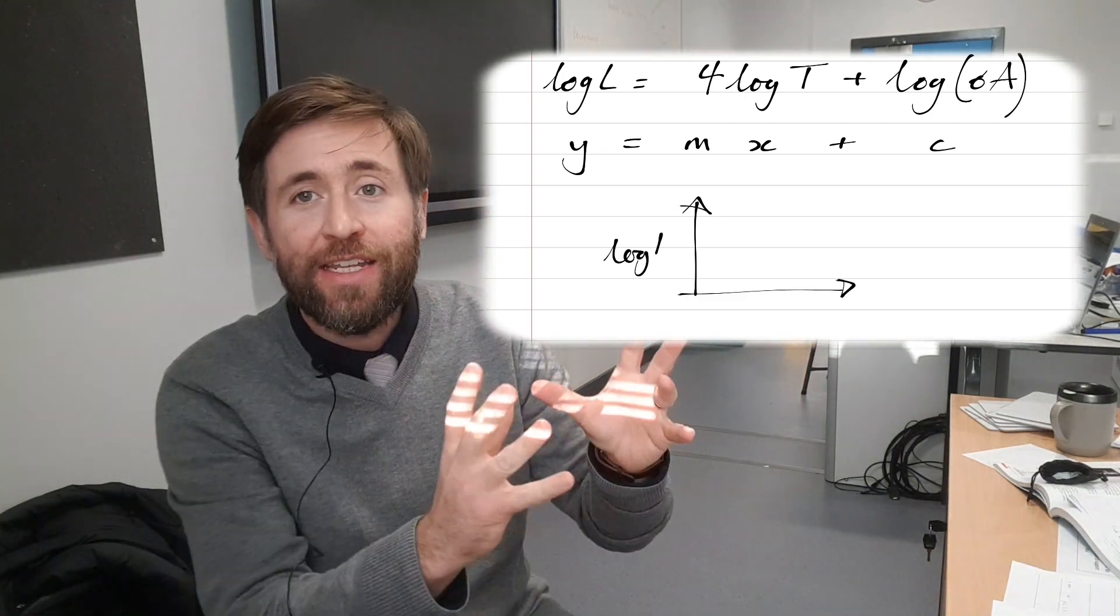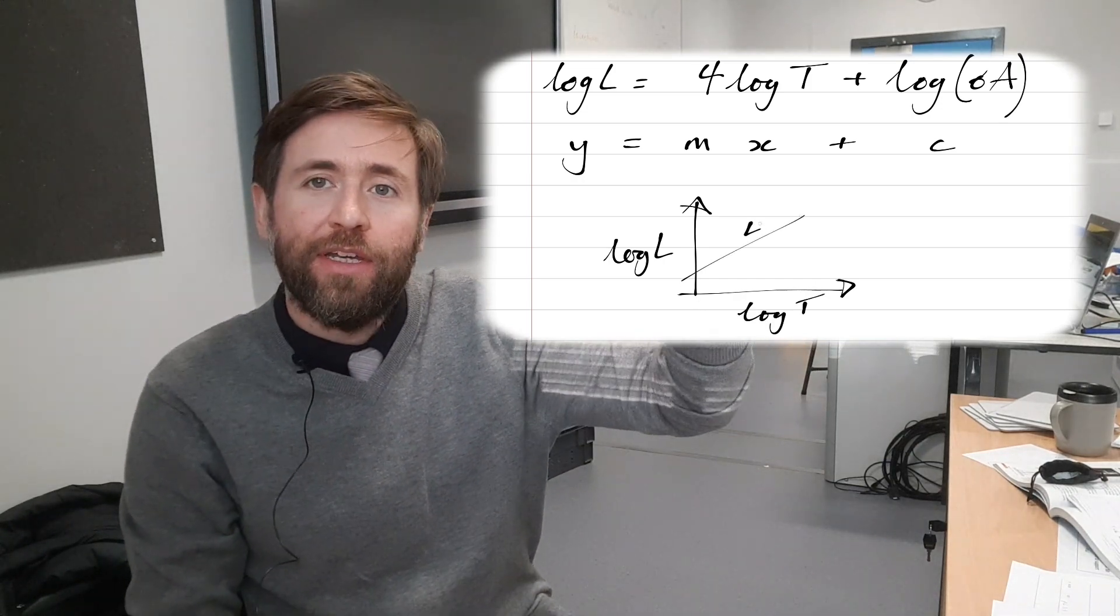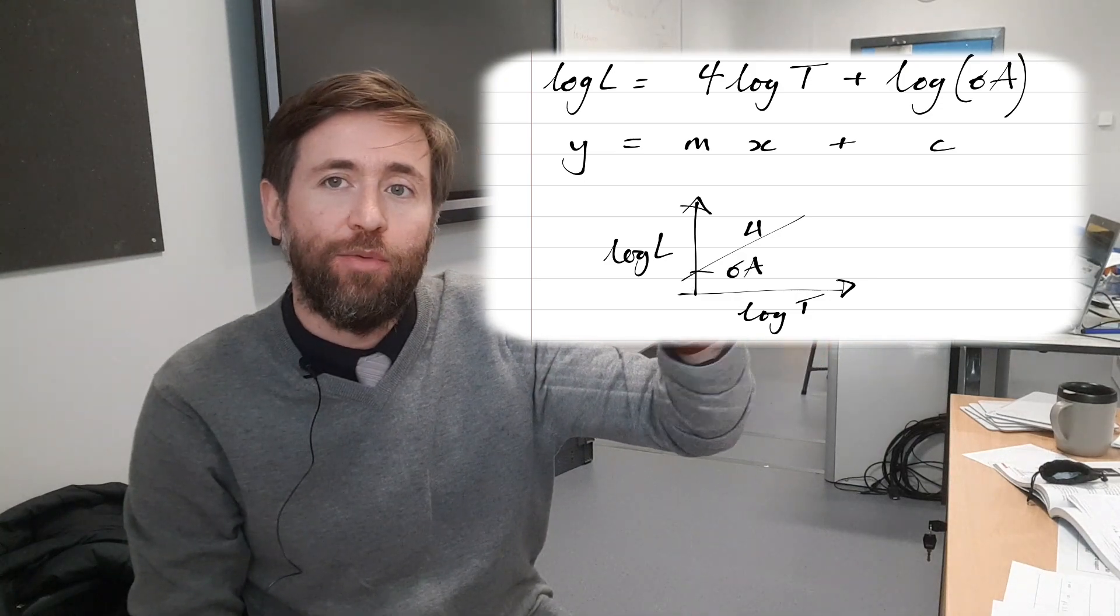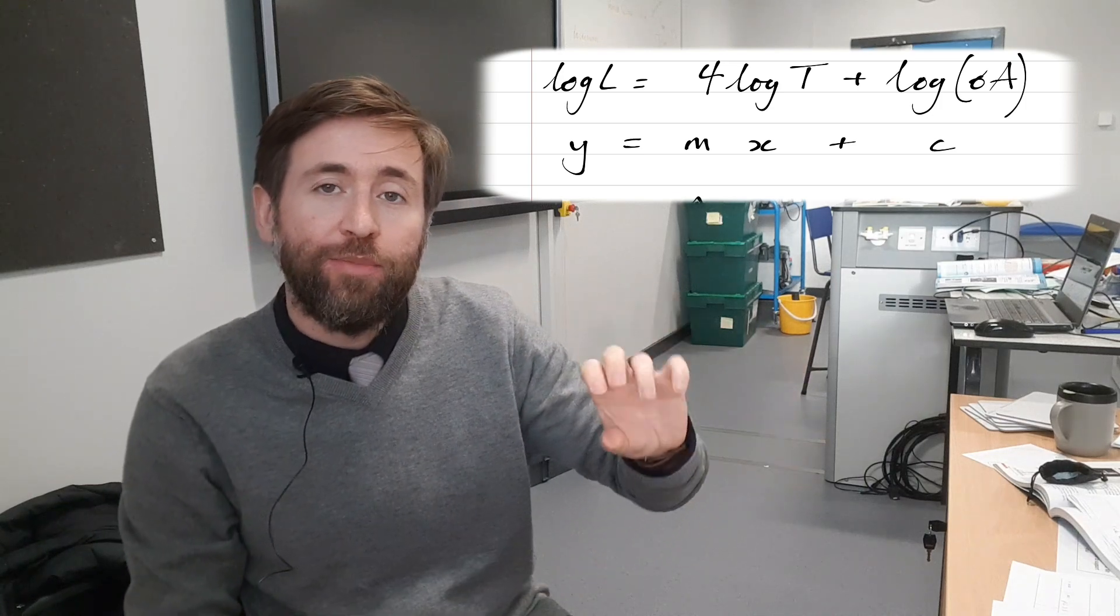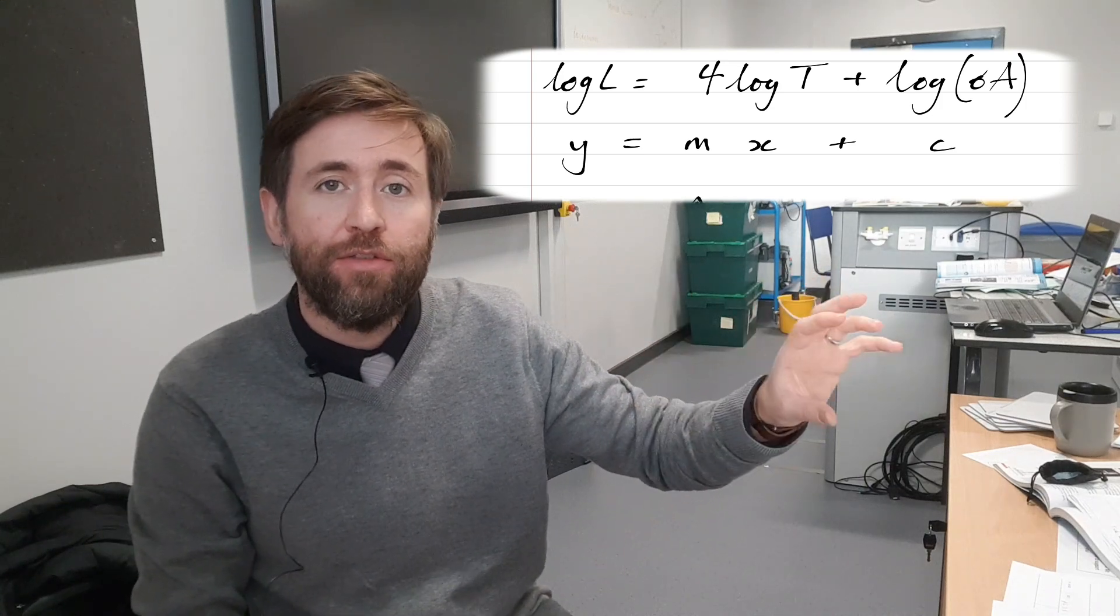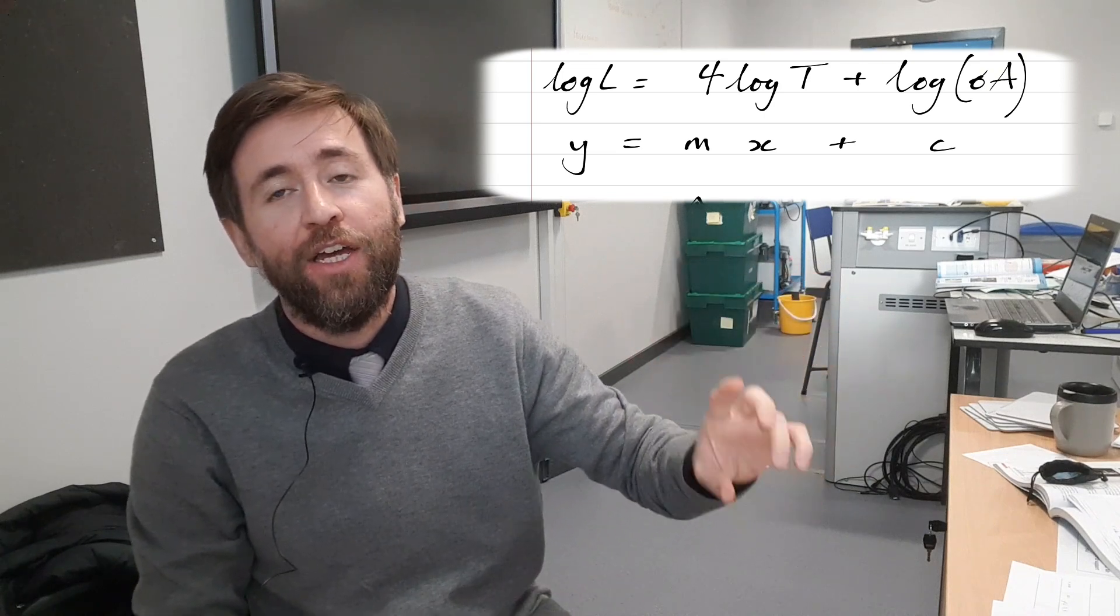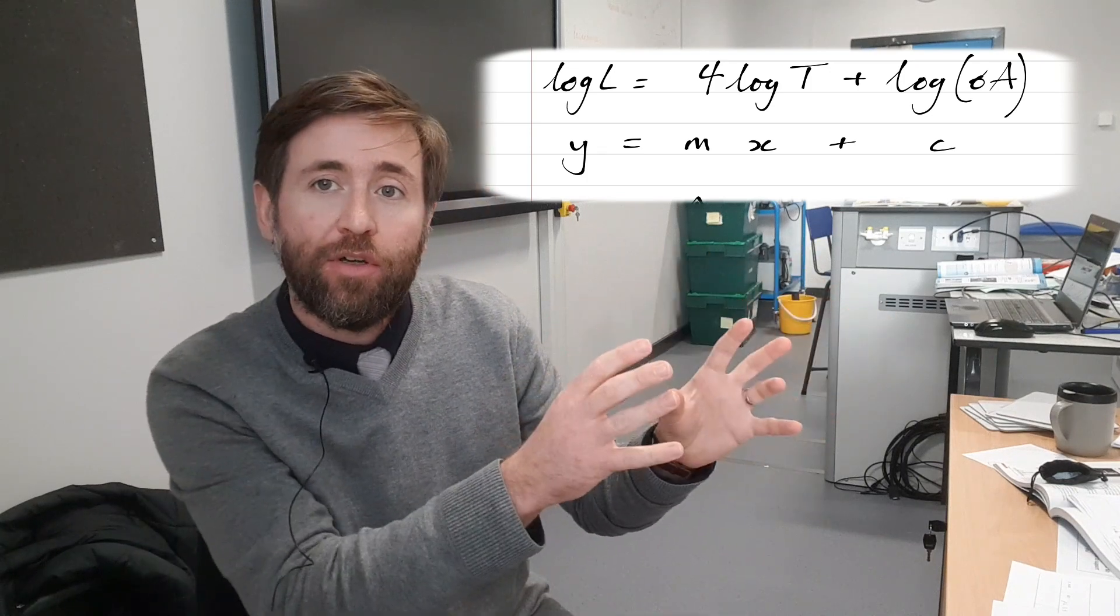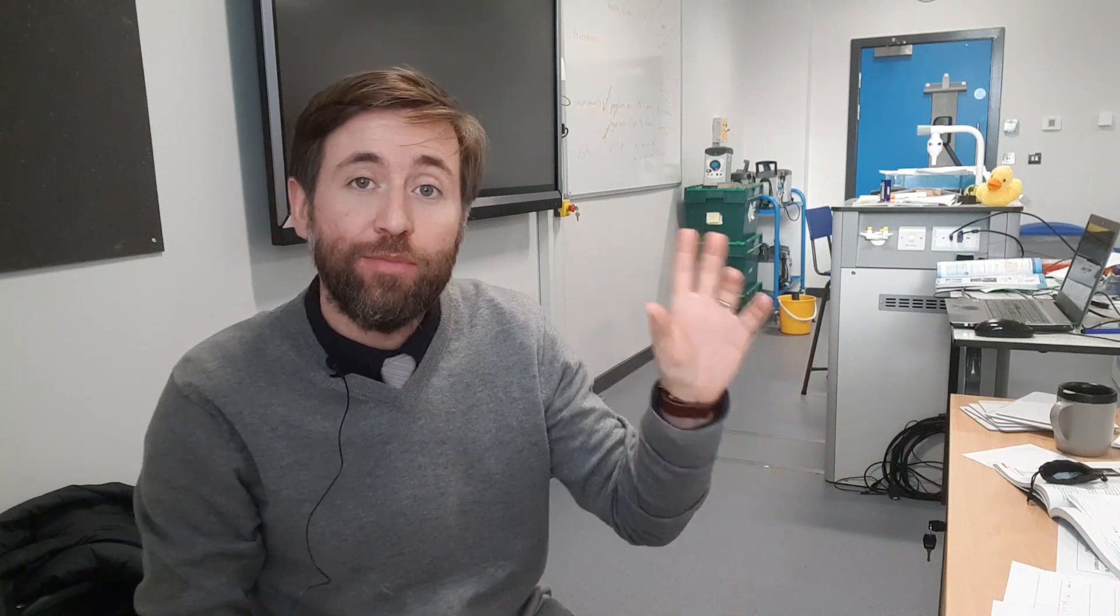So they could chuck at you any kind of equation and you'd have to recognize power law because the power is a fixed number and use your graph to find the gradient. And that's going to give you whatever that power is, whatever that indice is. What about the y-intercept? Well, that's going to be the log of whatever two fixed constants you've got in that equation. So in this case, it's log sigma A, which is log Stefan-Boltzmann constant times by the area of the star. But that will just be another constant that they've given you, maybe they'll call it K or something like that.